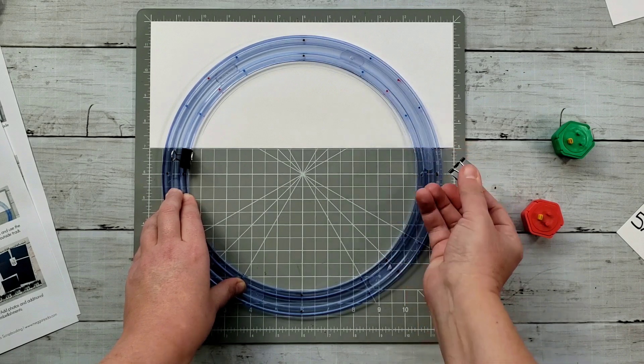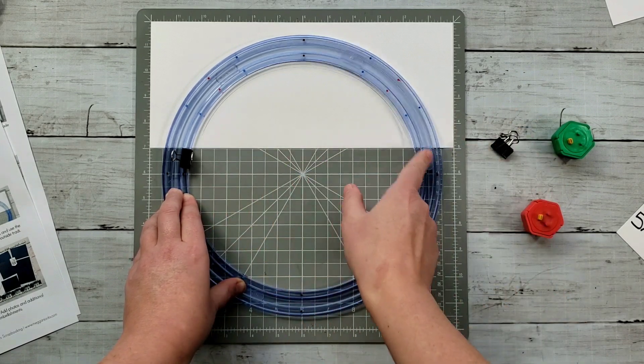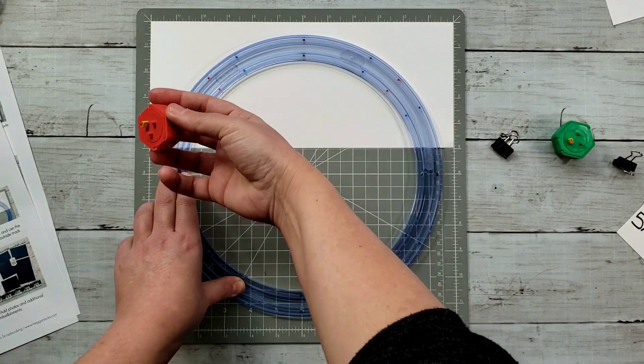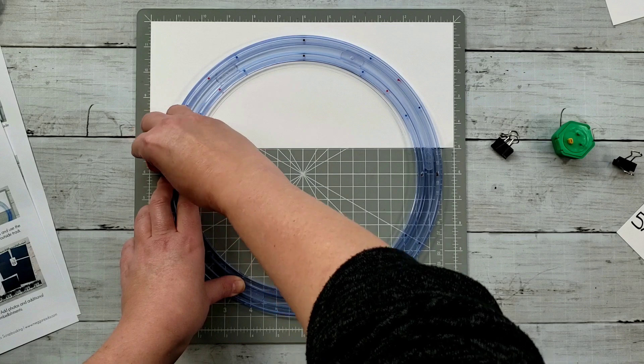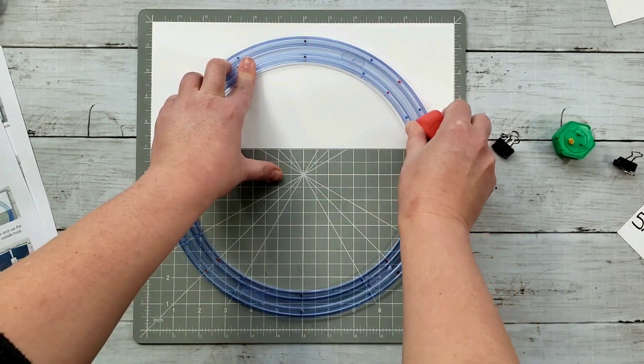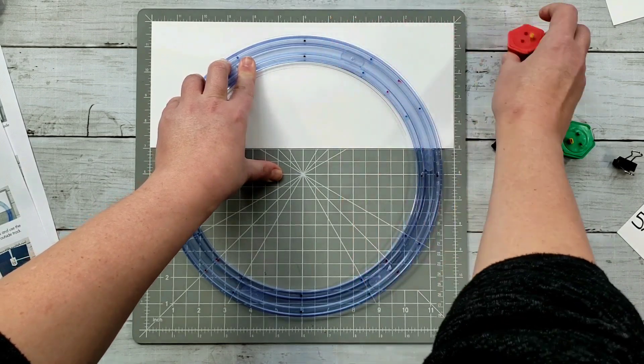I can go ahead and remove my binder clips. I'm still holding my template in place. I'm going to grab my red blade again, and I'm going to come on the outside edge, the outside track and trim all the way around to release my half circle.